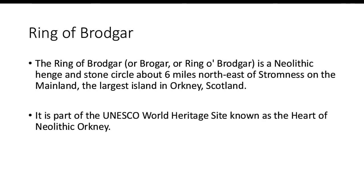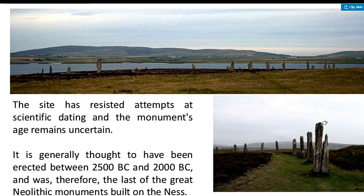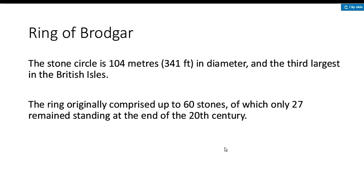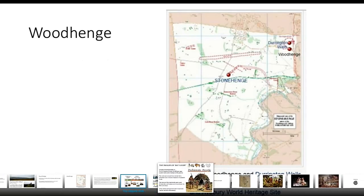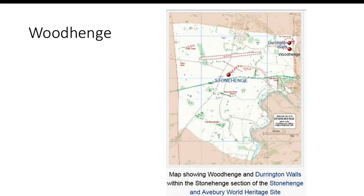The Ring of Brodgar is part of the UNESCO World Heritage Site known as the Heart of Neolithic Orkney. It features a very long line of single-piece standing stones — monoliths arranged in a row — erected during around 2500 BC, almost contemporaneous with the pyramids of Egypt. There is also a wood henge counterpart.